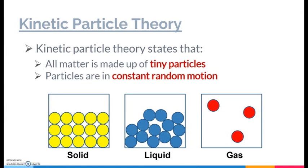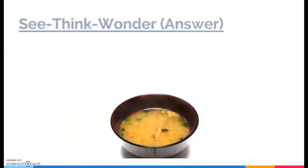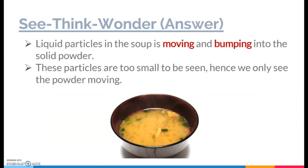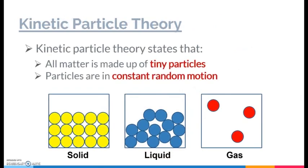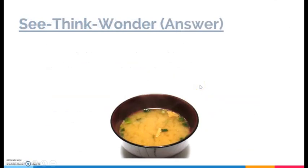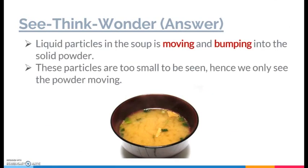How does this relate to the video you just watched? In the video, there were actually liquid particles in the soup. They were moving and bumping into the solid powder, hence causing the solid powder to be floating around in a random motion. Because as mentioned, the kinetic particle theory says that all particles are in constant, random motion. So by knocking onto the solid powder, it causes the powder to move around.